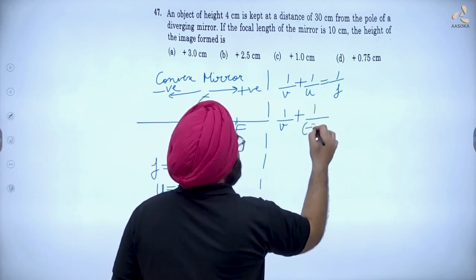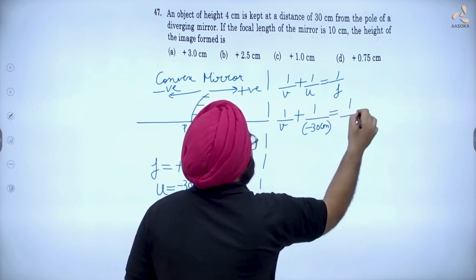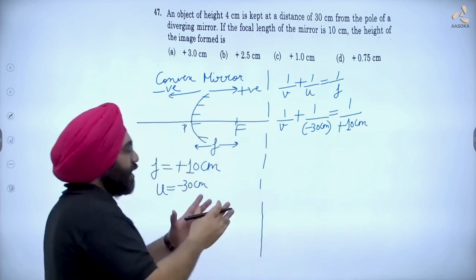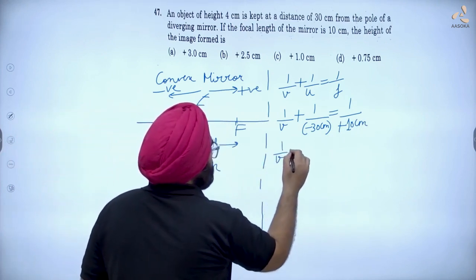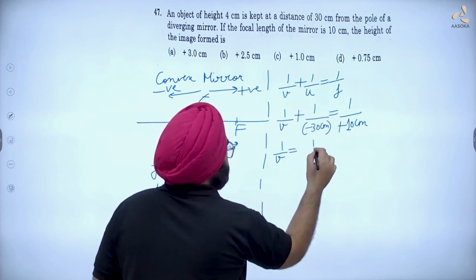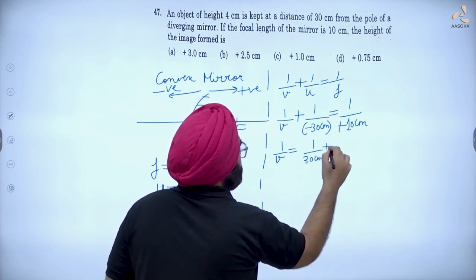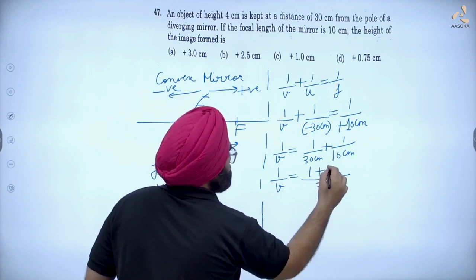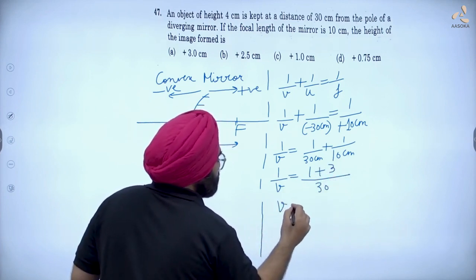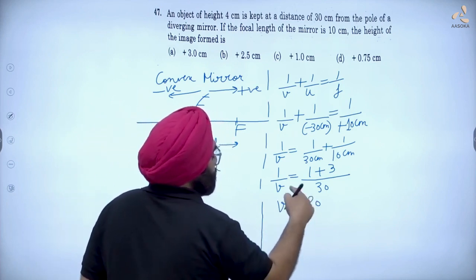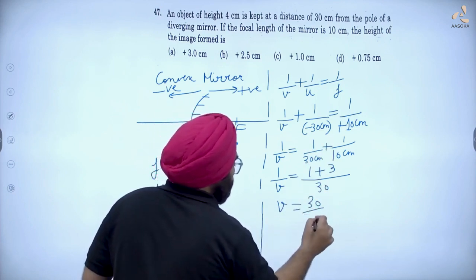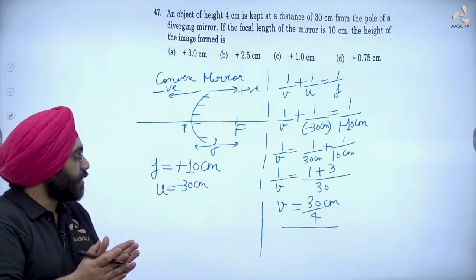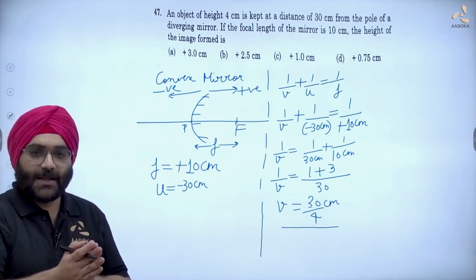Using the mirror formula: 1/f = 1/v + 1/u. So 1/v = -1/30 + 1/10. Taking LCM of 30: that gives (-1 + 3)/30 = 2/30. Reciprocal करने पर v = 30/4 cm — यह आपका location of image आ गया, 30/4 cm।